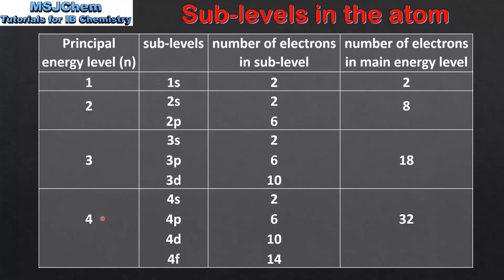In N equals 4 we have the 4s, 4p, 4d, and 4f sublevels. The 4s sublevel can hold 2 electrons, the 4p 6, the 4d 10, and the 4f 14 electrons, which gives us a total of 32 electrons in the N equals 4 energy level.